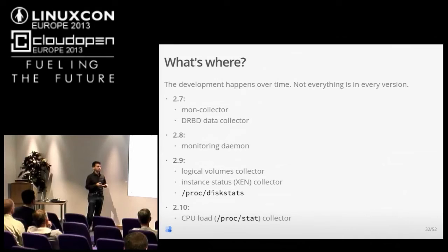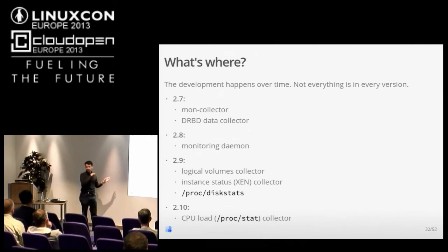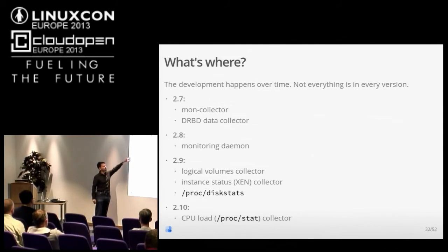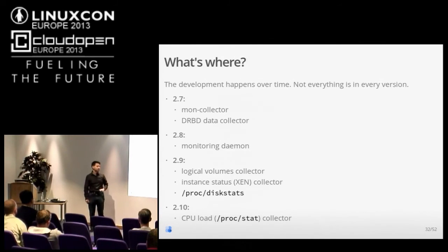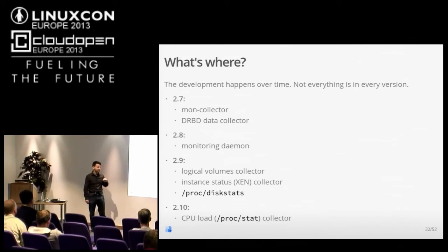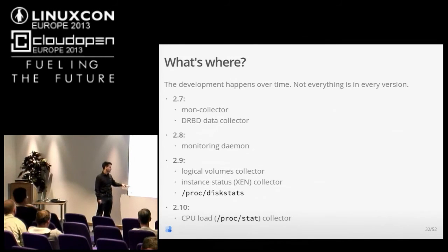Regarding the Ganeti development roadmap: since October/November last year, it has switched to a quarterly release schedule. MonCollector and the DRBD data collector — the first to be written — were released in Ganeti 2.7. The monitoring daemon itself is in Ganeti 2.8, which came out last week. Ganeti 2.9, currently in RC, will provide more data collectors — specifically the one for logical volumes, the instance status collector for Xen, and the one for proc disk stats. The CPU load collector will be in Ganeti 2.10.